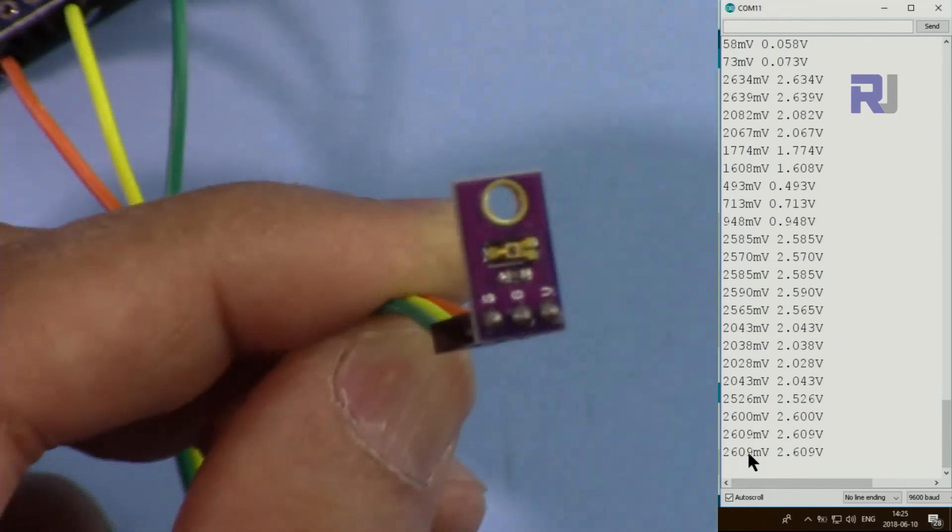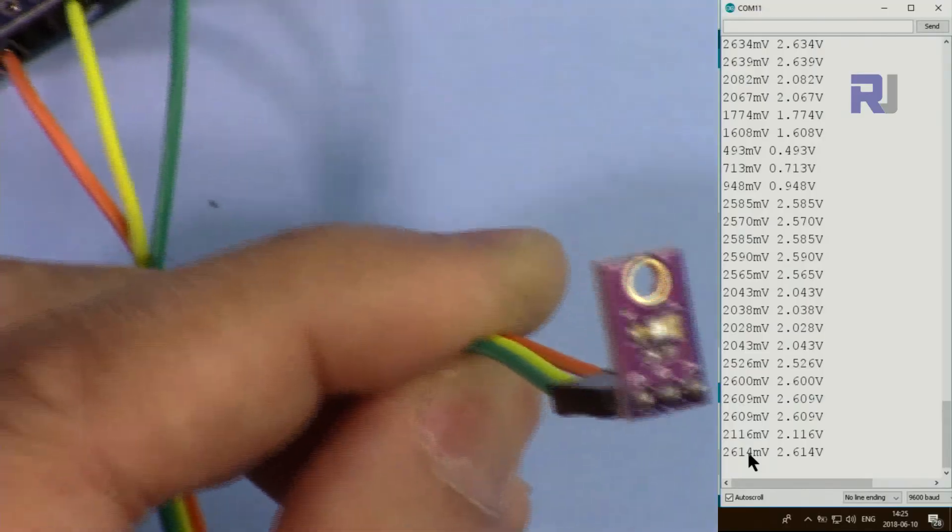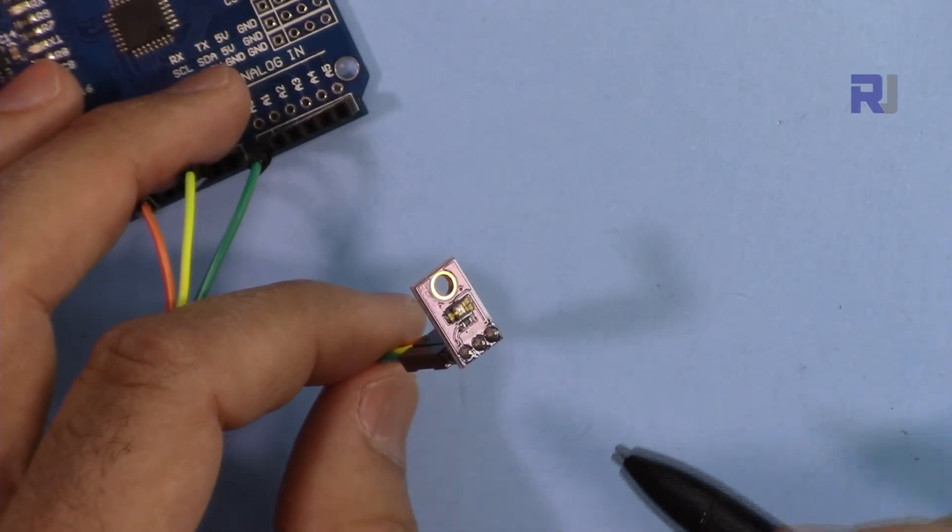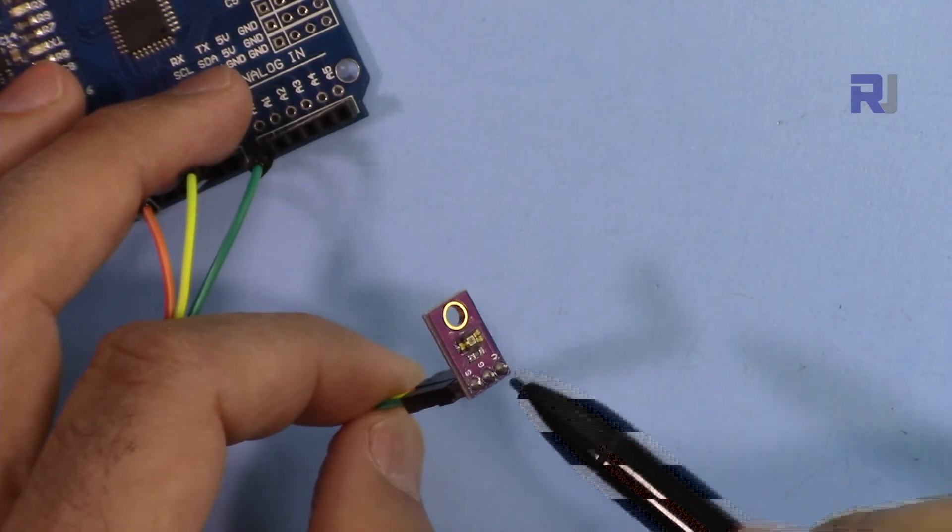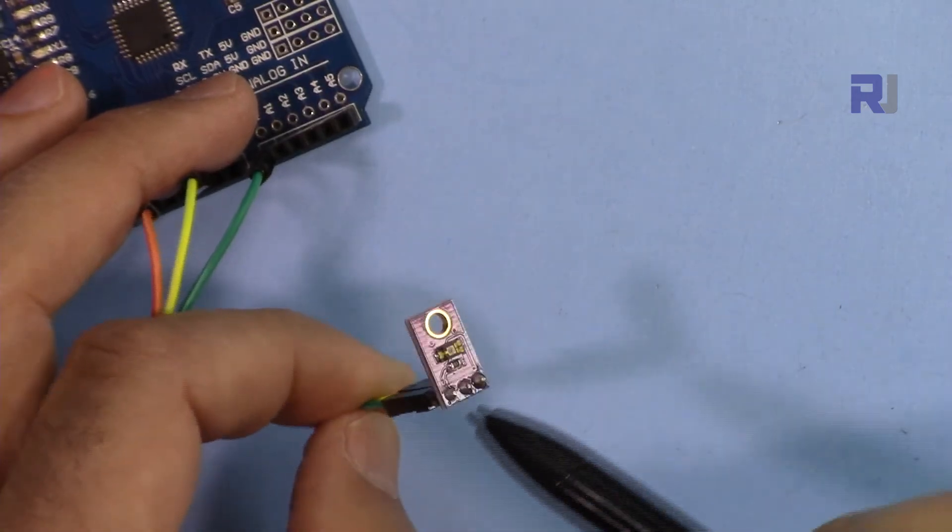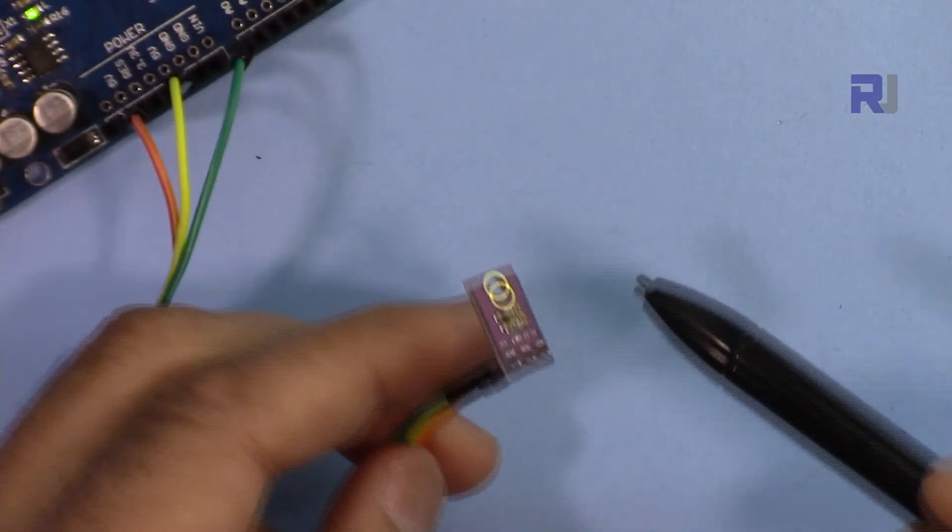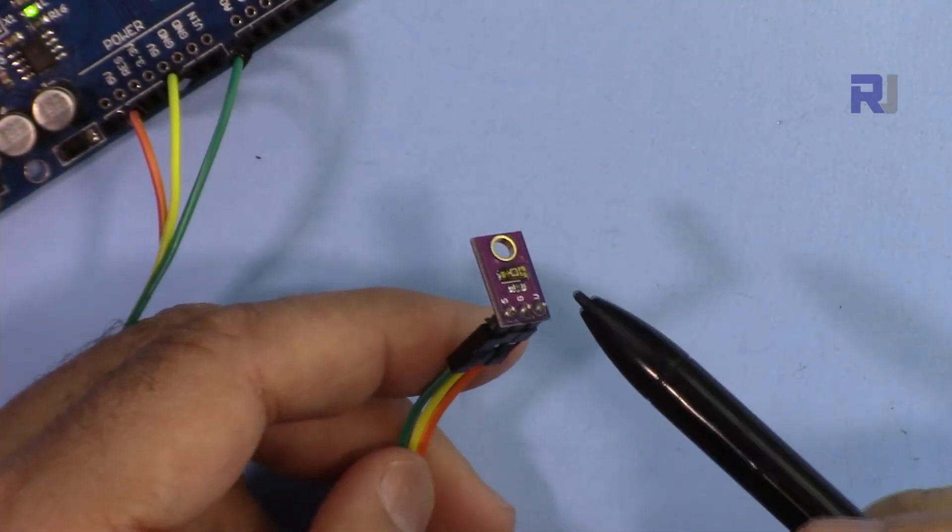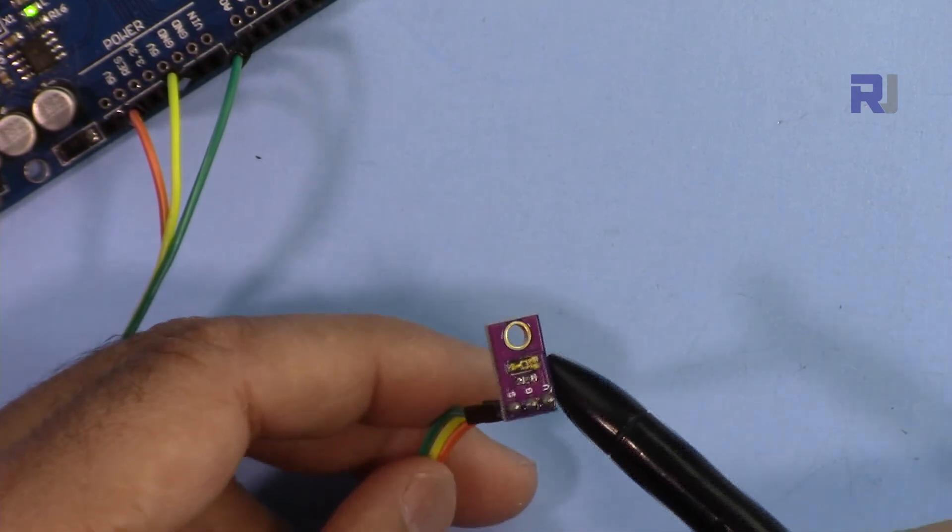This was an introduction to TEMT 6000 photo transistor ambient light sensor. I'll have other videos related to this if needed. Please make sure to subscribe so you can get updates. Thank you for watching.